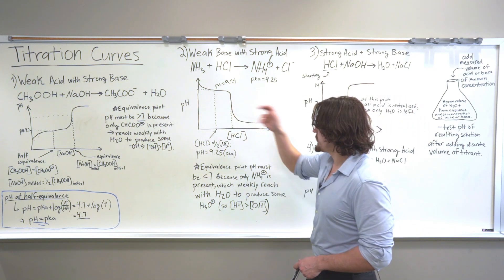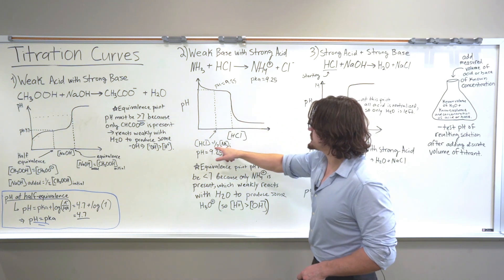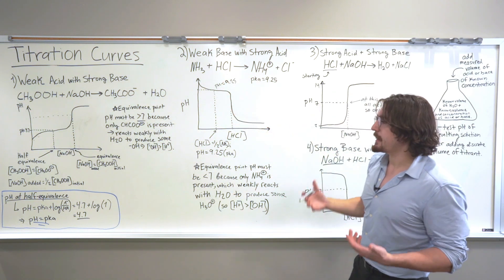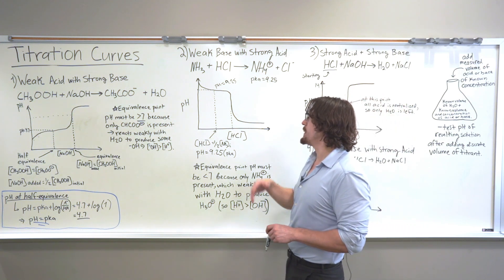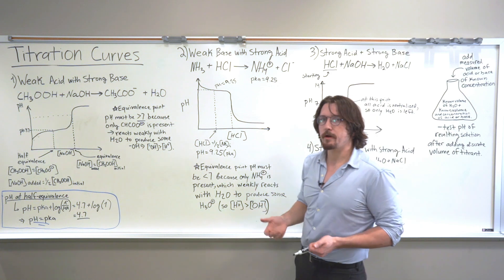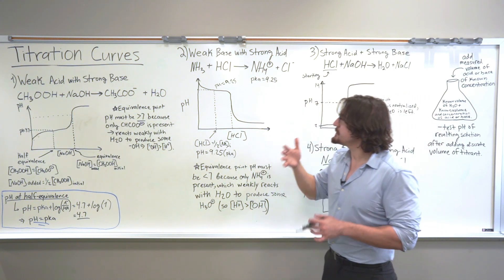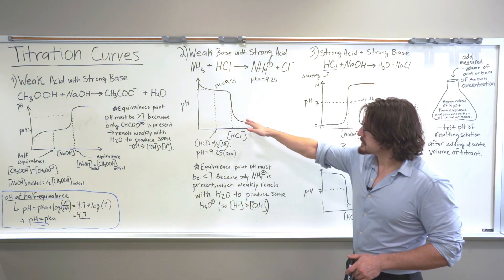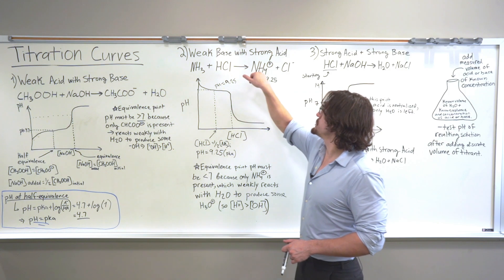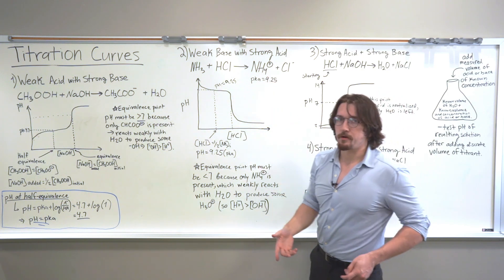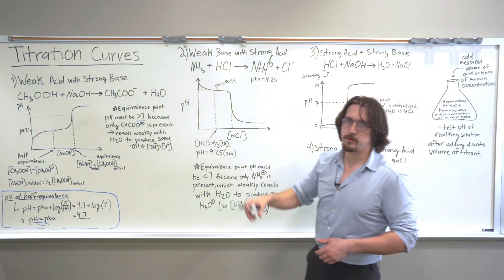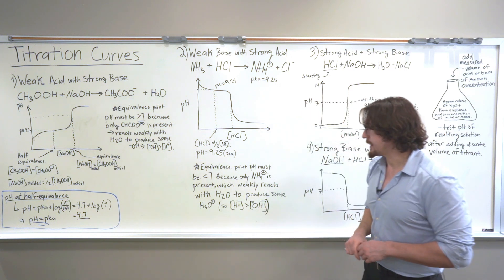Then we have the equivalence point. Enough hydrochloric acid has been added such that all of the initial ammonia has been converted to ammonium. At that point, any additional strong acid added will only be able to react with water, which will directly produce hydronium or protons, so the pH will dip really fast. Is this equivalence point going to be less than or greater than 7? In this case it has to be acidic. At the exact equivalence point, all the ammonia — the weak base — has been converted into ammonium, the weak acid. This ammonium can react with water and produce some protons. So the pH has to be less than 7 because there are relatively more protons than hydroxide ions.